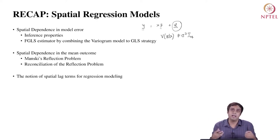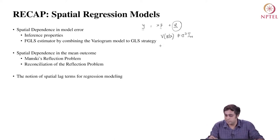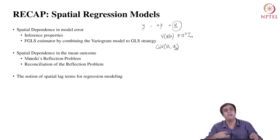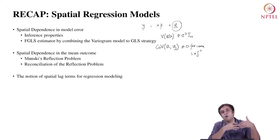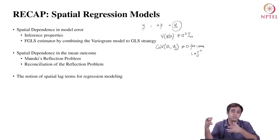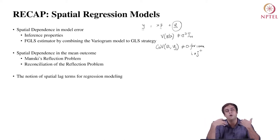When we relax the assumption of spherical errors and introduce spatial dependence in regression models, the covariance of u_i and u_j, where i and j are location markers, will be not equal to zero for at least some i not equal to j locations. We are moving to a situation where errors may be non-spherical in nature, also termed as heteroscedastic systems.